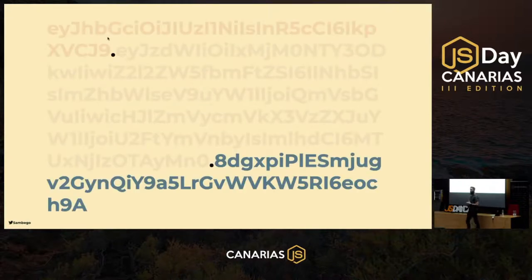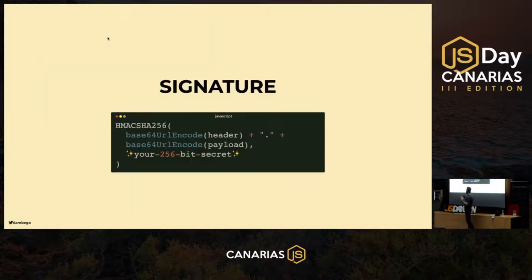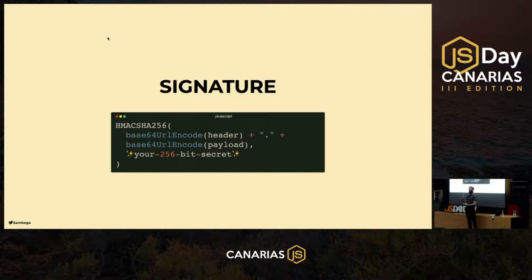Important: the payload is just base64-encoded, so don't put anything sensitive in there — no credit card numbers, no passwords. Anyone can go to base64decoder.com and see what's inside. Lastly, the signature validates your JWT. We take the base64 header and payload, run them through a signing algorithm like HMAC with a secret, and produce a signature. If someone changes the header or payload, the signature won't match — so you can detect tampering.